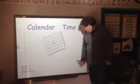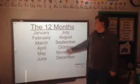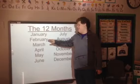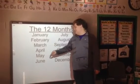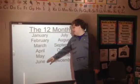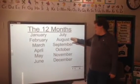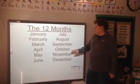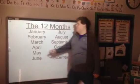Okay, it's time for calendar time. The months of the year: January, February, March, April, May, June, July, August, September, October, November, December.